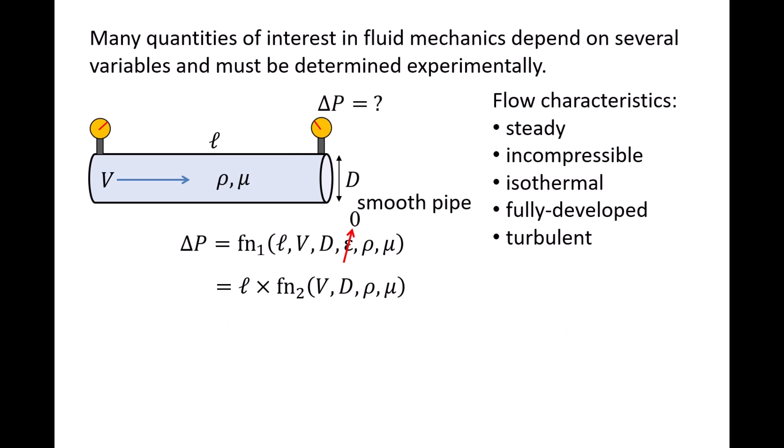Let's divide both sides of the equation by length l, and define the pressure drop per length as delta p sub l. This will be our new dependent variable that we are interested in predicting. In principle, we could continue to conduct experiments, exploring just one variable at a time, to find the functional relationship between delta p l and the remaining four variables.